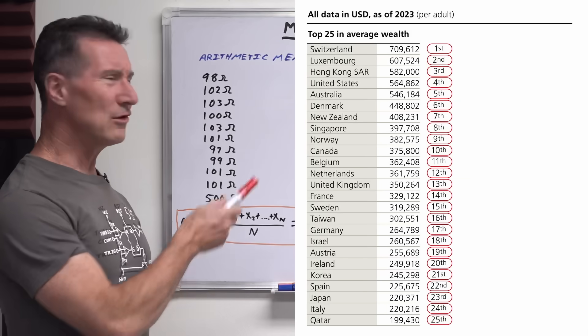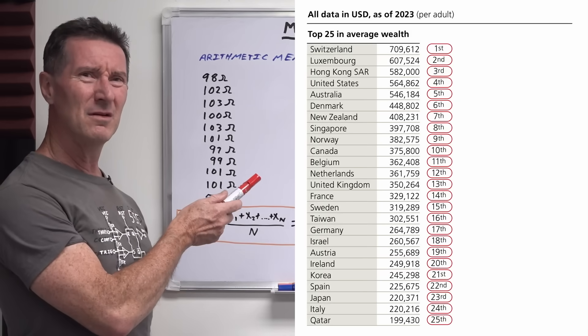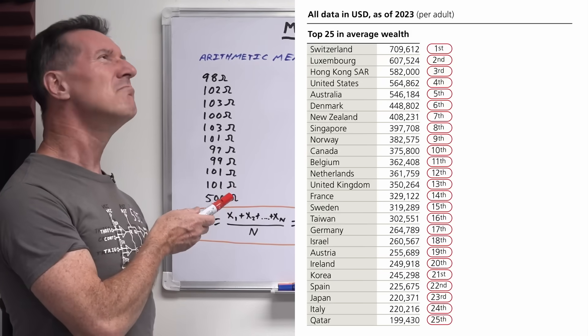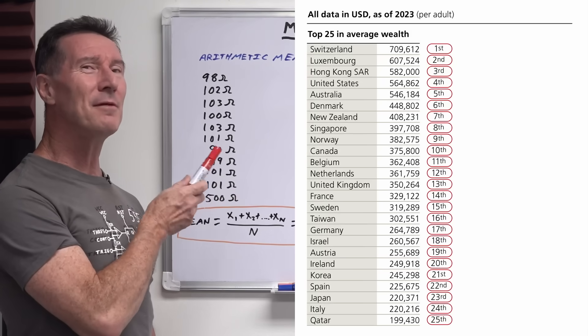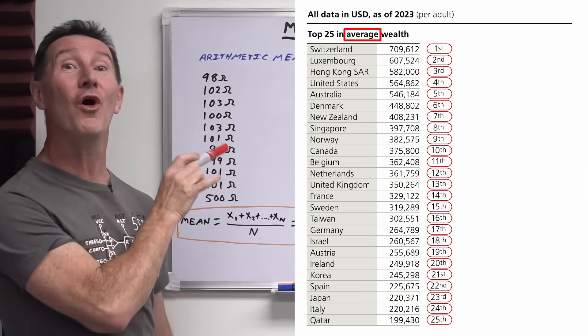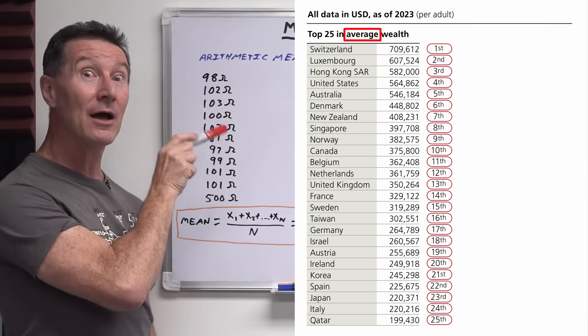But I know what you're thinking, you're looking at that number and going, Dave, I don't have a wealth of $560,000. What's going on here? Well, you know that they're manipulating stuff. But take a look at the top, what do you see? The word average. Aha, gotcha.